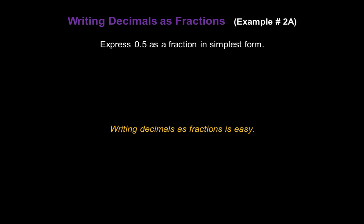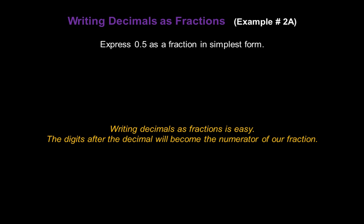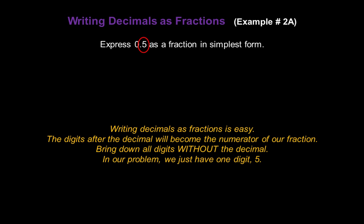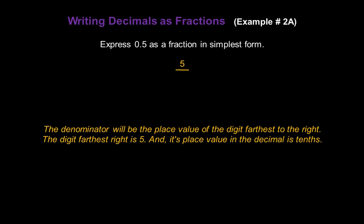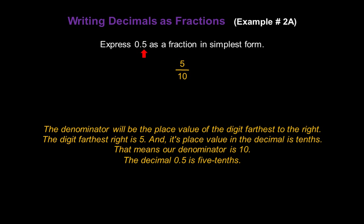Now let's express the decimal 0.5 as a fraction in simplest form. Writing decimals as fractions is easy. The digits after the decimal — in this case the 5 — will become the numerator of our fraction. We bring down all digits without the decimal. We have just one digit, the 5, so let's bring it down as our numerator. The denominator will be the place value of the digit farthest to the right. The digit farthest right is 5, and its place value in the decimal is tenths, so our denominator is going to be 10. The decimal 0.5 is 5 tenths.